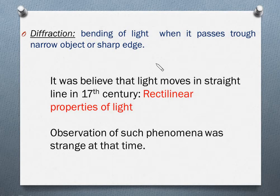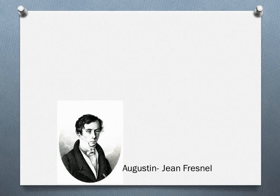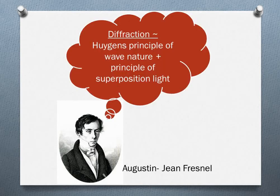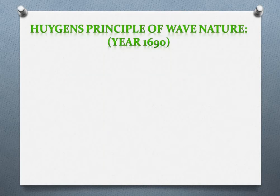The explanation of this phenomenon was very challenging at that time, until the scientist Fresnel came up with an idea. His idea was based upon two already existing principles: the Huygens' principle of wave nature, and the principle of superposition of light. He combined these two ideas to explain the diffraction phenomenon. Let's discuss these two principles.